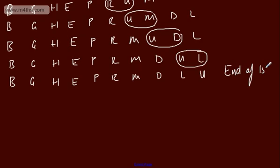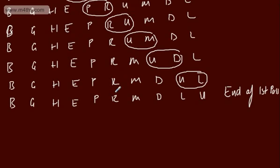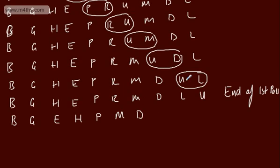I'm now switching to pass by pass. Do we need to swap B and G? No. G and H? No. H and E? Yes. E and H then P? H and P — no. P and R — no. R and M? Yes. Now be careful: R and D? Yes. R and L? Yes. R slots in and U is already locked down. End of second pass — U and R are in place.